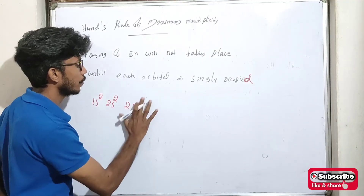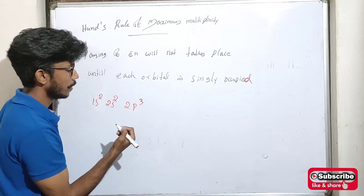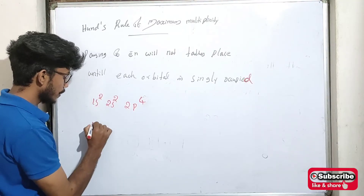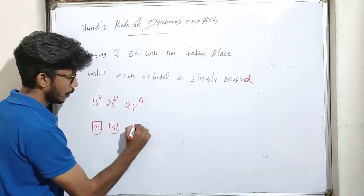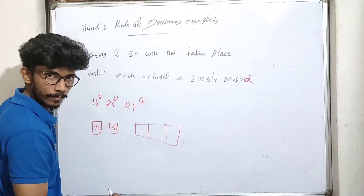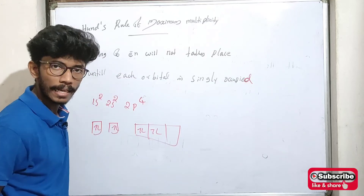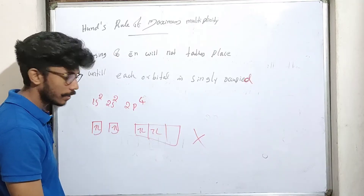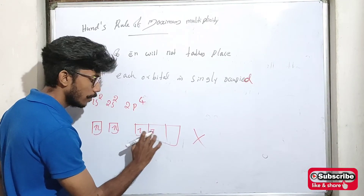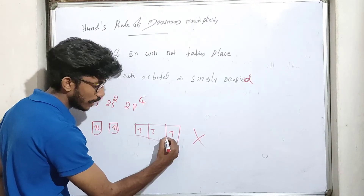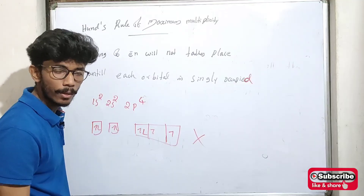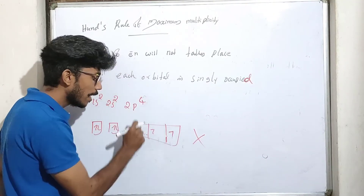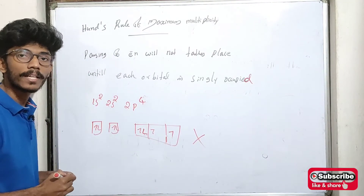For example, consider 2p3 and 2p4. According to Hund's Rule of Maximum Multiplicity, for 2p3 each orbital gets one electron first — one electron in each of the three p orbitals — before any pairing occurs.